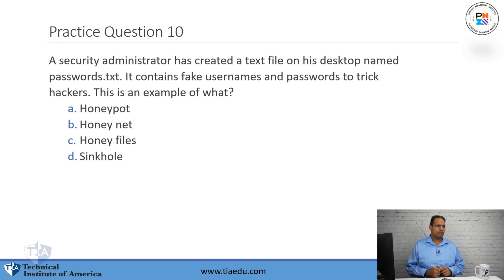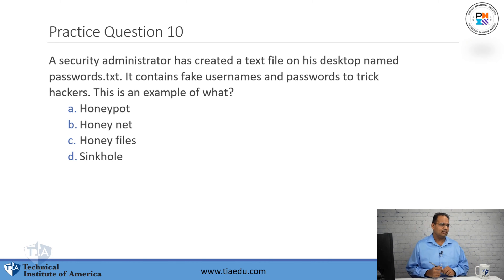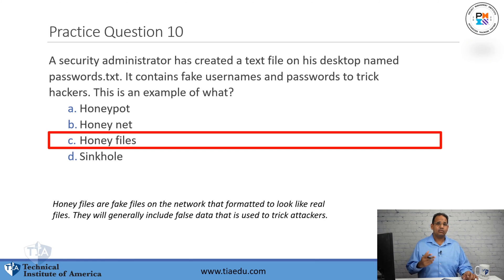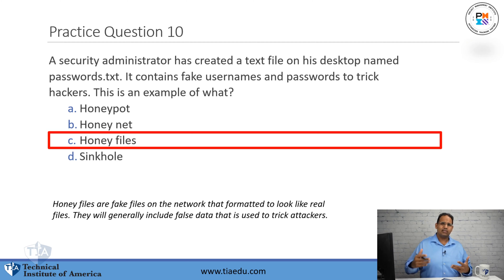Number 10: a security administrator has created a text file on his desktop named passwords.txt. It contains fake usernames and passwords to trick hackers. This is an example of: A, honeypot. B, honeynet. C, honey files. D, a sinkhole. The answer is a honey file. Honey files are fake files you put onto your network hoping that attackers go after those instead of the actual real ones.